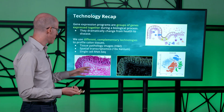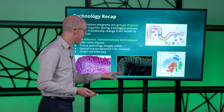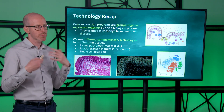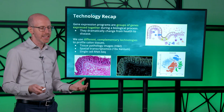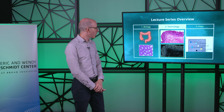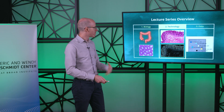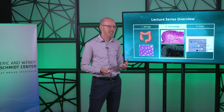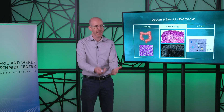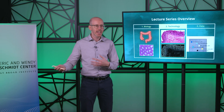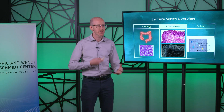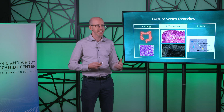Each of these technologies has different strengths and weaknesses. A common approach in biology is to apply multiple technologies to a tissue in order to leverage the strength of each technology and get a more holistic view of what's happening in the tissue and what's going wrong in disease. We've now covered biology and technology, and in the next lecture series we'll go into what data you will be provided with during the competition and what the actual problems are that you'll be working on with these data sets.